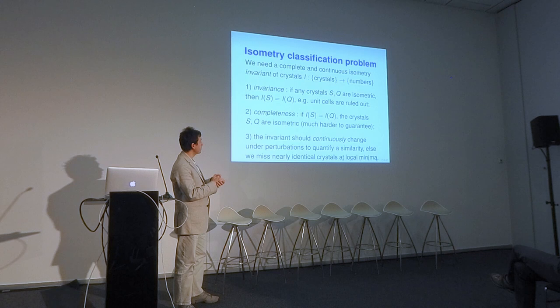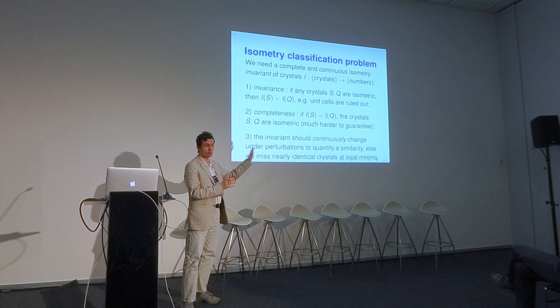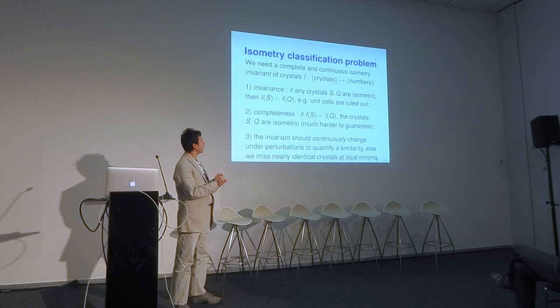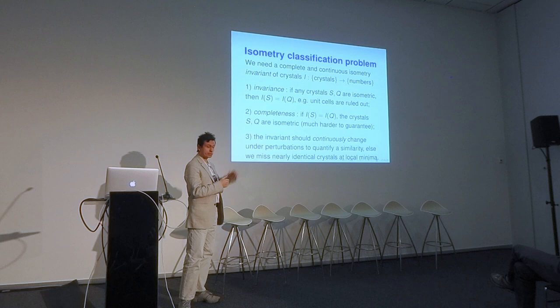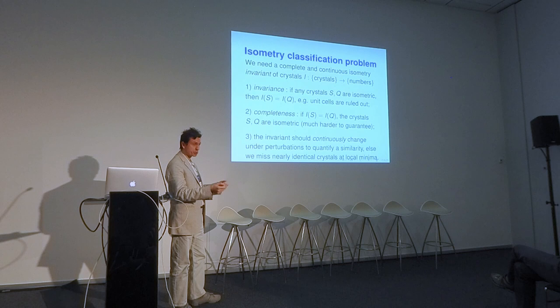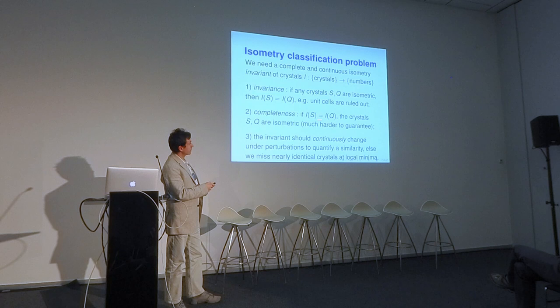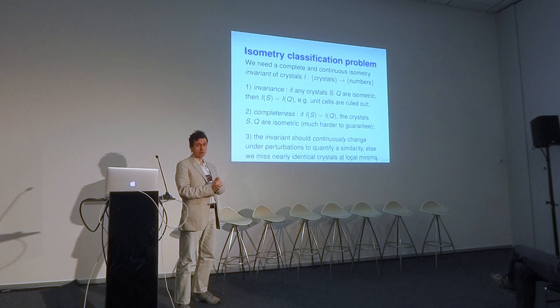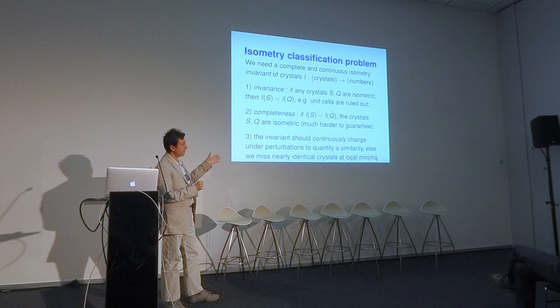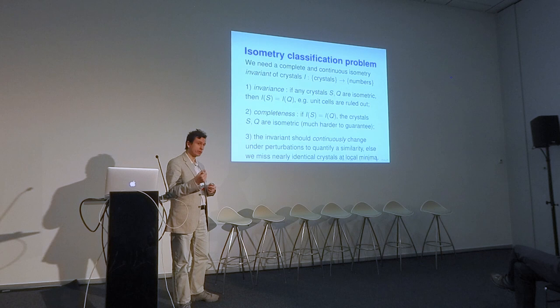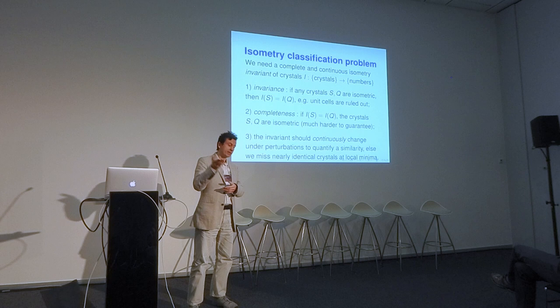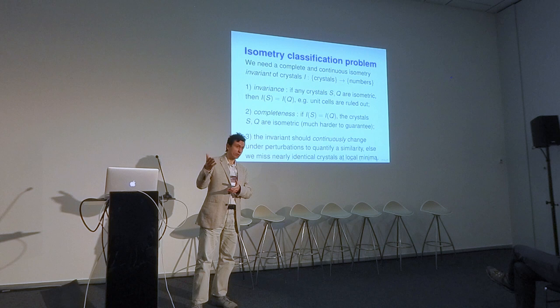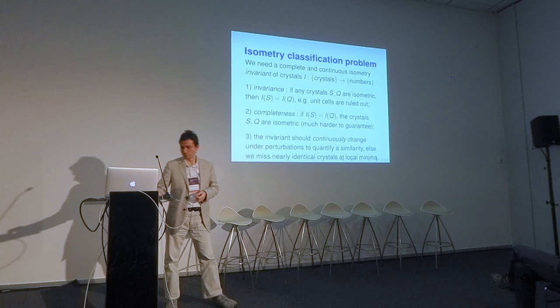A good invariant must satisfy three conditions. First, it must be a proper invariant: if two crystals are rigidly equivalent (isometric), the invariant must be the same — meaning unit cells are ruled out since they are not invariant. Second, completeness, a much harder property: if the invariant takes the same value on two crystals, they must be isometric. Third, continuity or stability under perturbations: since above zero temperature all atoms vibrate and coordinates are always given with bounded noise, the invariant should quantify similarity between different crystals.